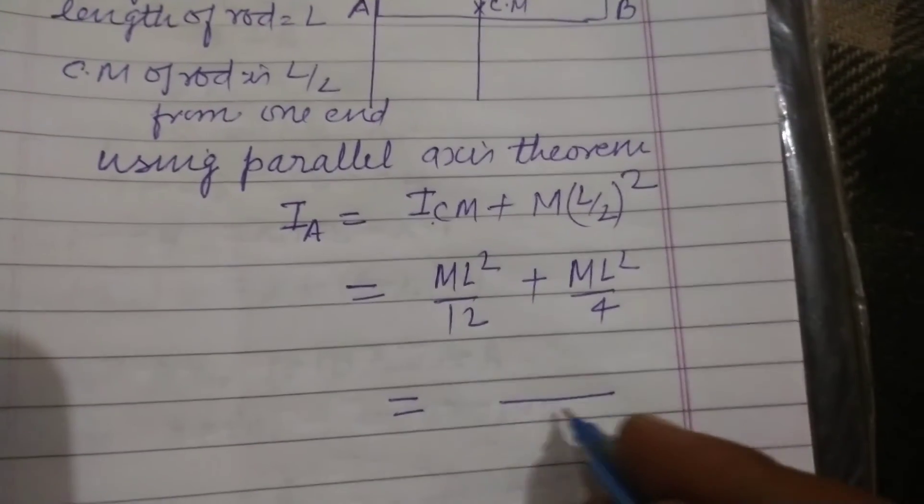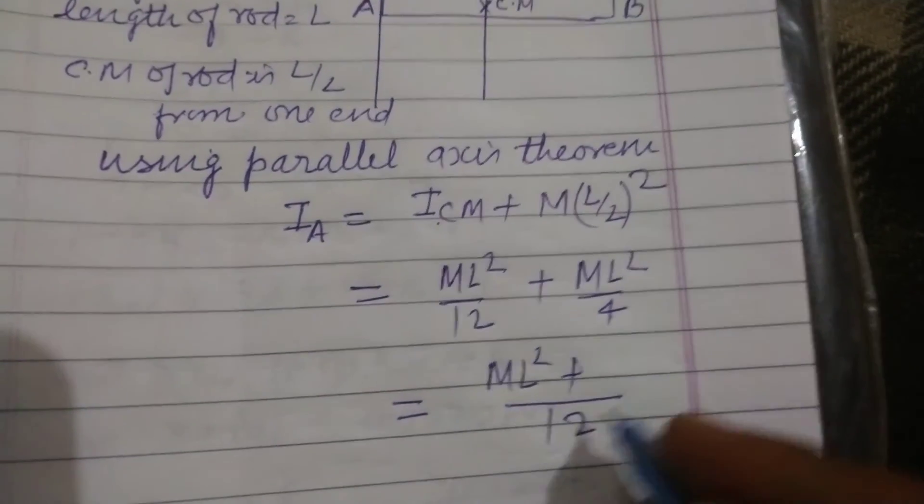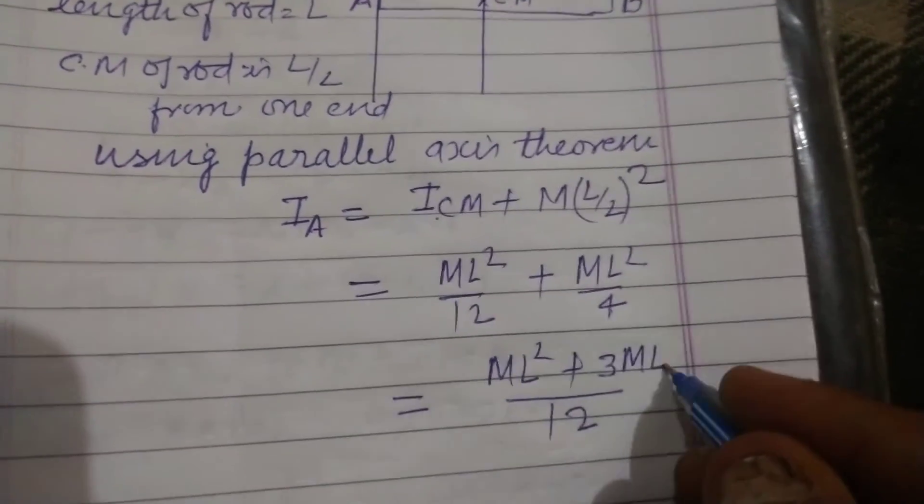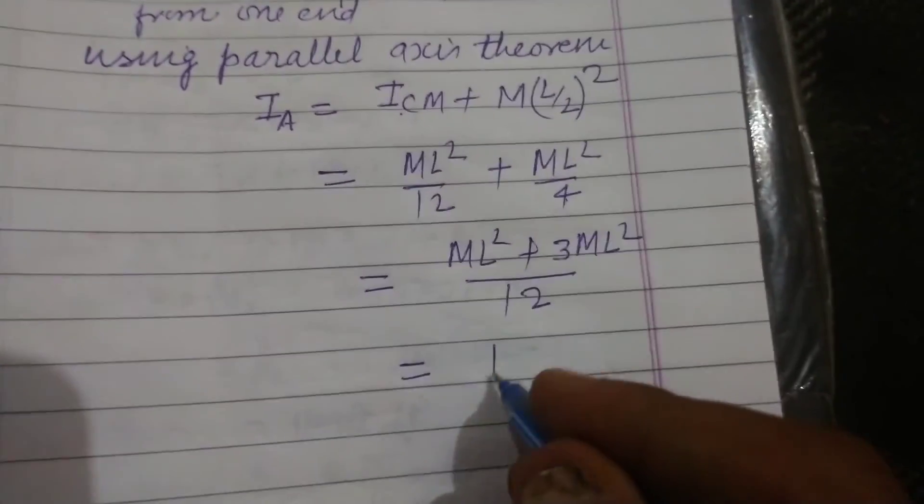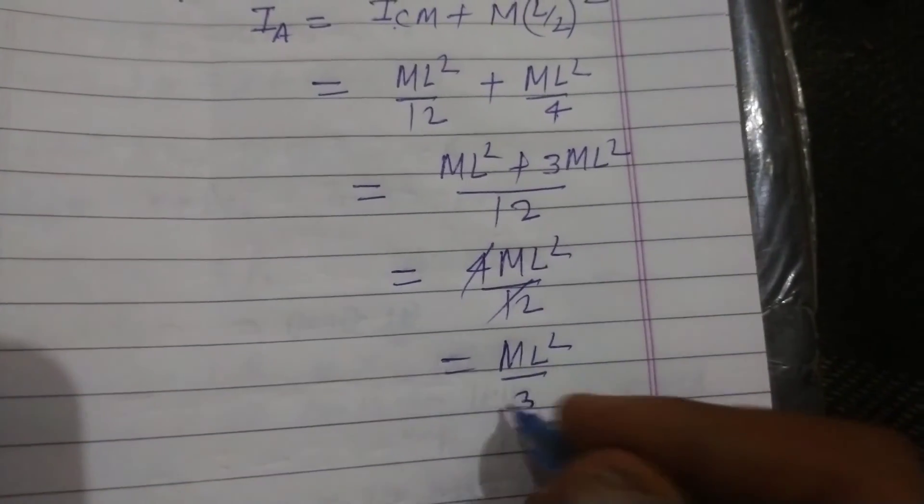So we take 12 as LCM. ML² plus, 4 goes into 12 three times. And this will be 4ML²/12, which simplifies to ML²/3.